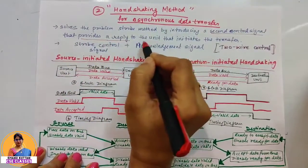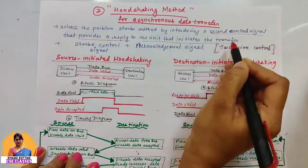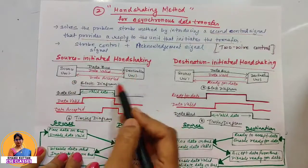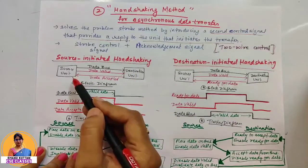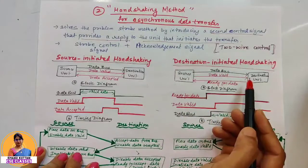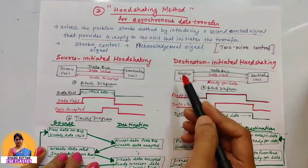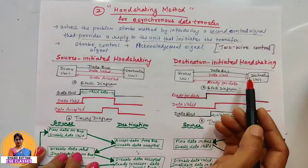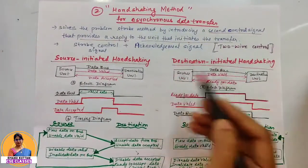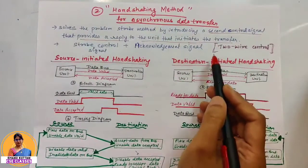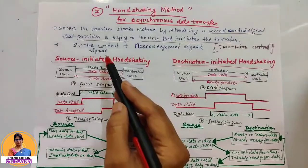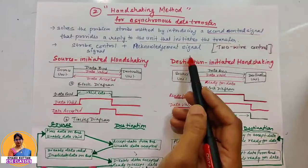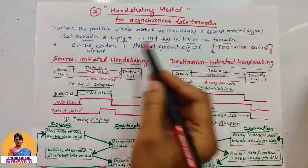The second control signal provides a reply to the unit that initiates the data transfer. If the source initiates the data transfer, the reply will go to the source. If the destination unit initiates the data transfer, the reply will go to the source unit. So generally there is two-way communication, which is why we call it a two-way control signal. When we use an acknowledgement signal along with the strobe control signal, it becomes a handshaking method.